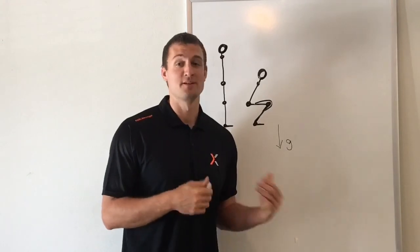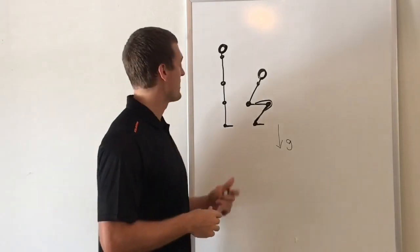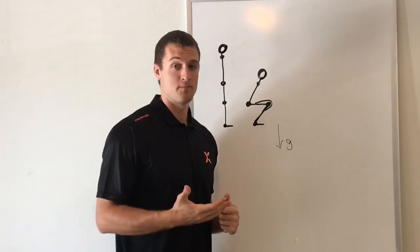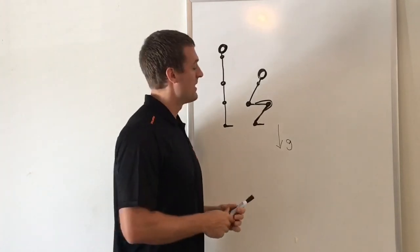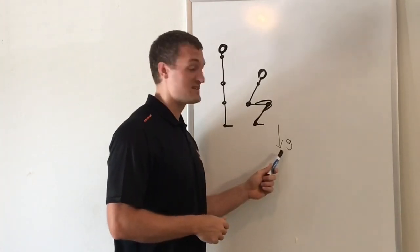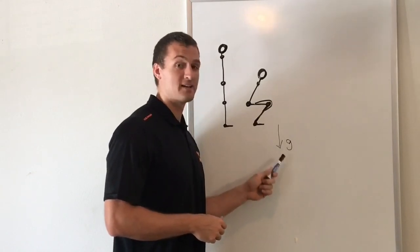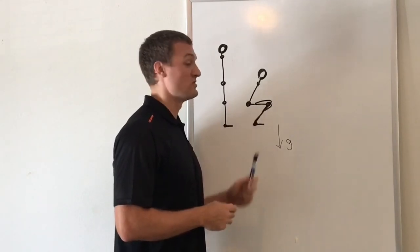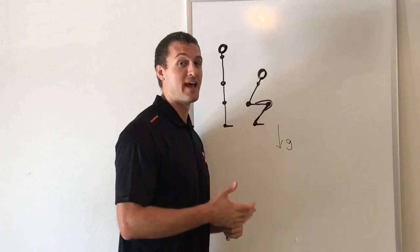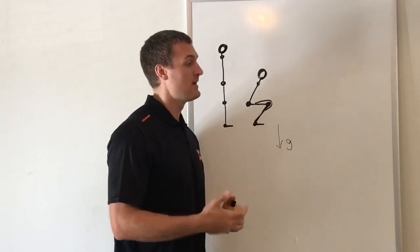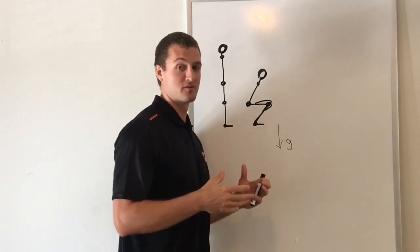Now let's think about some internal factors. So internally, our force is going to be muscle tension. Now this is going to be much more complicated because unlike gravity, which stays the same in direction and magnitude, muscle tension is going to change both in direction and magnitude. A big factor is going to be the changing length of the muscle.